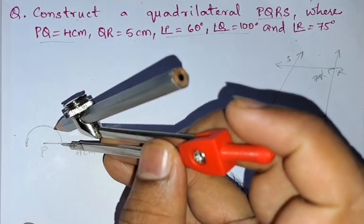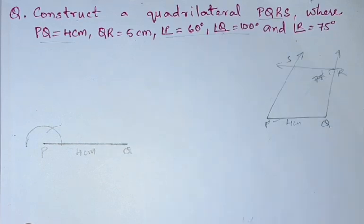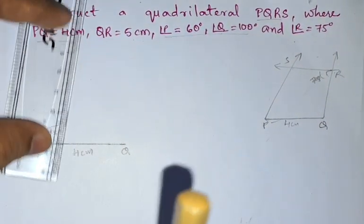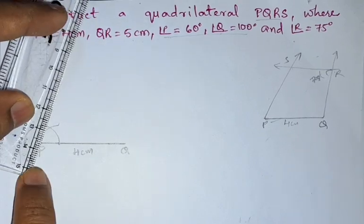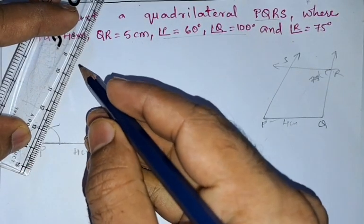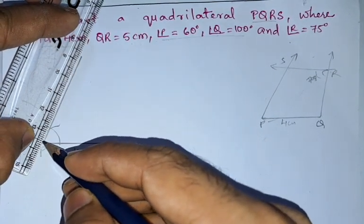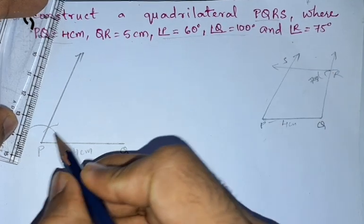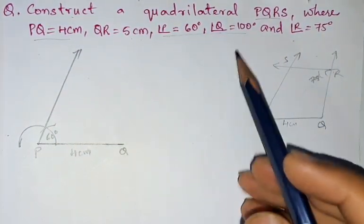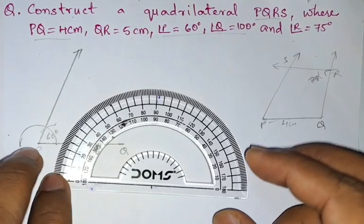Next cut this semicircle. So this is 60 degrees. Next is angle Q, which is 100 degrees. So for that we will use the protractor.